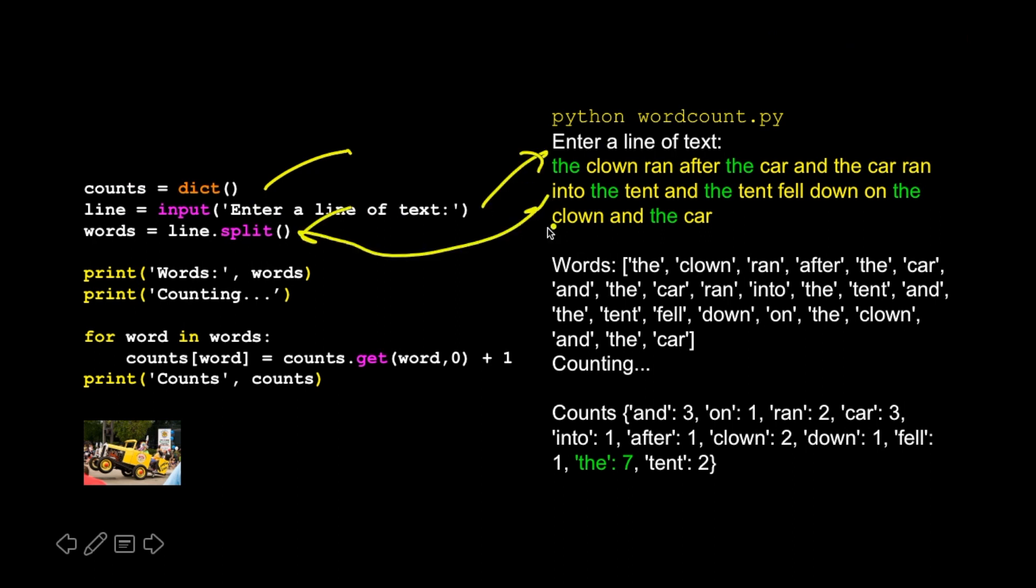And then we split that and we print the words out, so these are the words, right? Then we have a for loop that's going to loop through all those things and then produce a dictionary. And when we print the dictionary out, that's what we're going to get, and the is seven, okay? So that's one line of text. That's how you walk across the words in a line of text after you split the line into separate words.